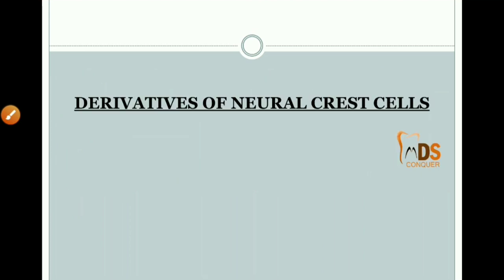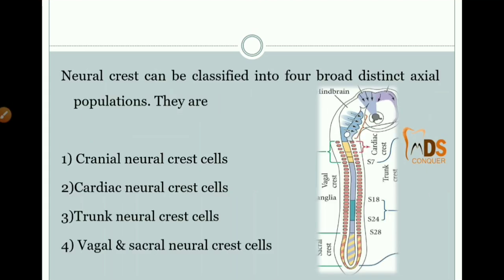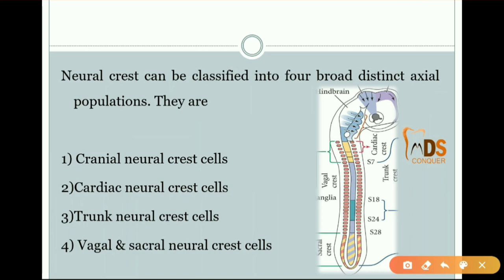Coming to the derivatives of the neural crest cells: neural crest cells have four types of derivatives — cranial neural crest cells, cardiac neural crest cells, trunk neural crest cells, and vagal and sacral neural crest cells.